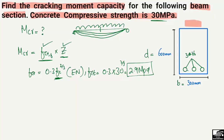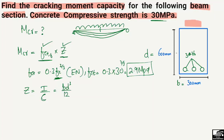Now we need the section modulus Z, which equals I divided by c. For a rectangular section, the moment of inertia I = b·d³/12, and c is the distance from the neutral axis to the extreme fiber, which equals d/2. Substituting, Z simplifies to b·d²/6.